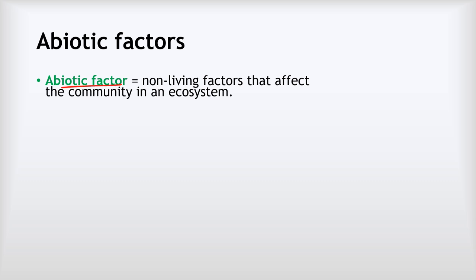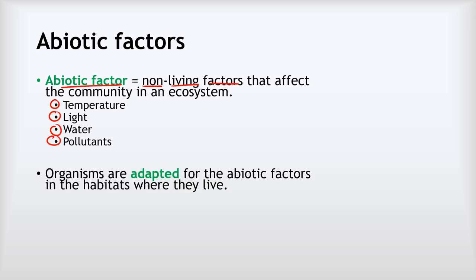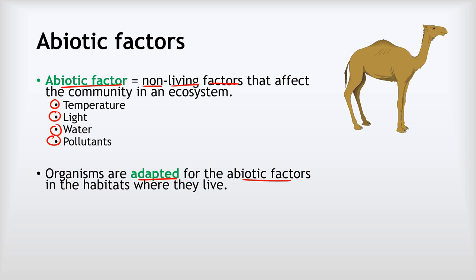In addition to biotic factors, we also have abiotic factors. An abiotic factor is a non-living factor that can affect the community in an ecosystem. Examples include temperature, light intensity, how much water there is, and the presence of pollution. All organisms are adapted for the abiotic factors in the habitats where they live. For example, a camel is adapted to live in very hot, dry desert environments — it can withstand very high temperatures and go long periods without needing to drink water.